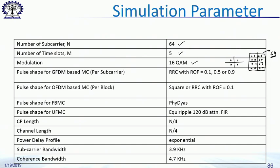For pulse shaping in the GFDM system, RRC with different roll-off factors is used, and for OFDM the roll-off factor is kept the same with RRC. For FBMC a phi-dash filter is used, and there are different filters — equi-ripple filter for UFMC and so on. CP length and channel length are made the same using an exponential power delay profile for evaluation, and subcarrier bandwidth and coherence bandwidth are the other two important parameters used.